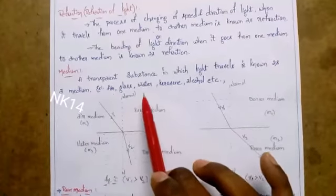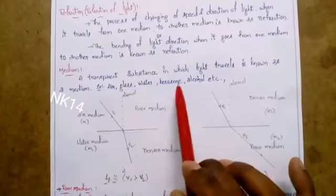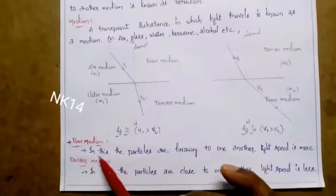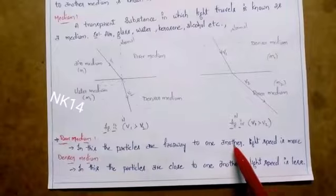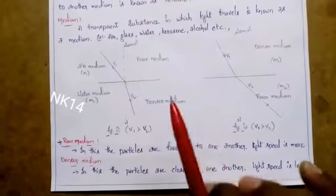Rare medium: in this, the particles are far away from one another. In rare medium, the particles arrangement will be far away from each other, so the speed of light is more.